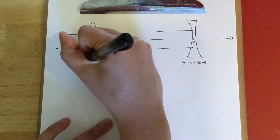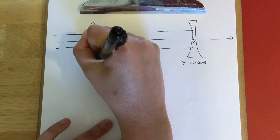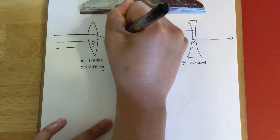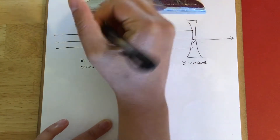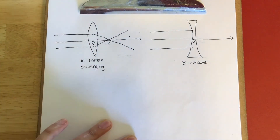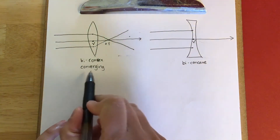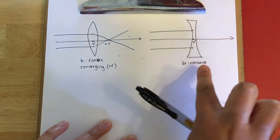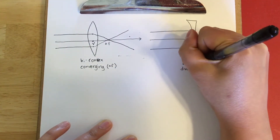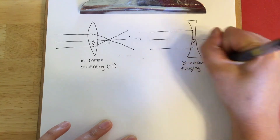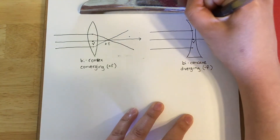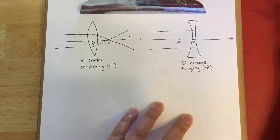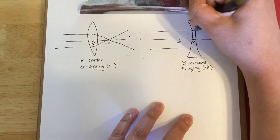Any ray that goes parallel above or below the vertex gets changed in its path because of the lens. A convex lens does converging behavior — it causes those rays of light to converge on a single focal point. The focal point is positive because the lens causes light to converge, giving a positive focal length. Diverging behavior diverges light away from a virtual focal point, so it has a negative focal length.